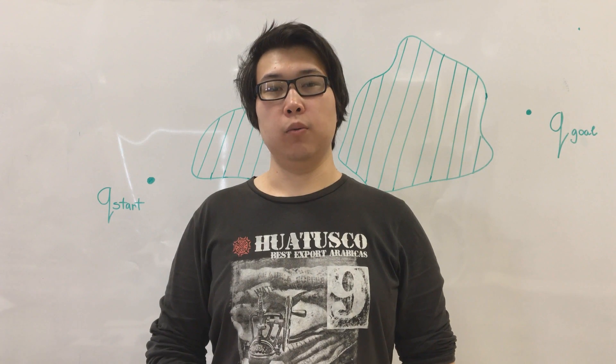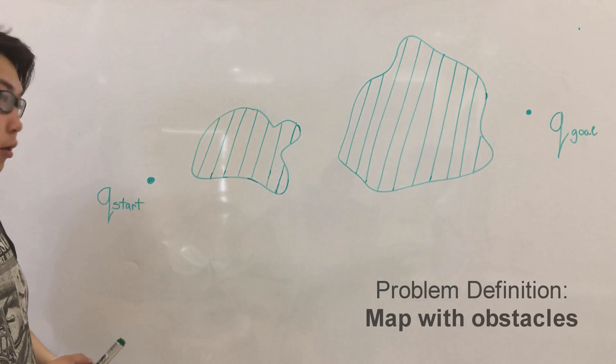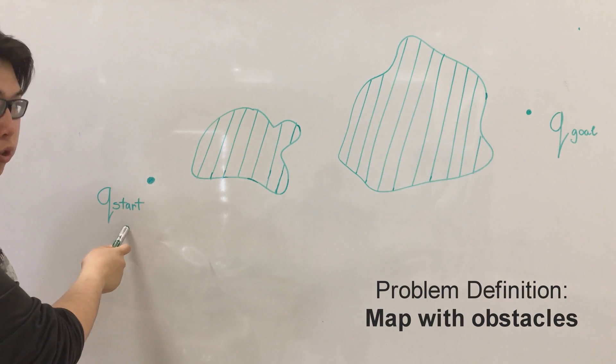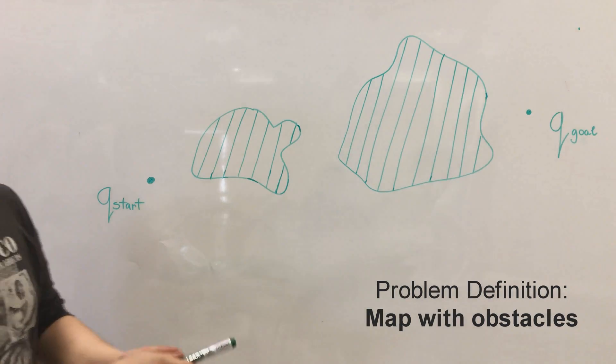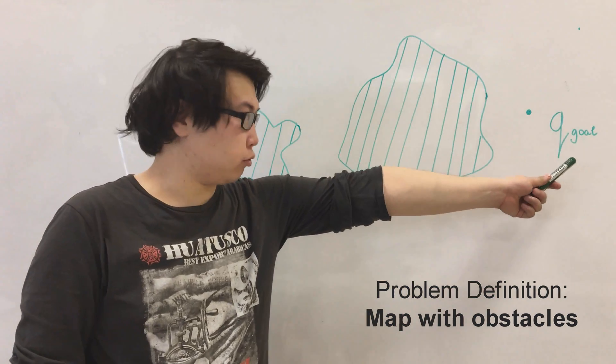Hey everyone, today I will explain bug 1 algorithm. A robot has a Q start which is the initial point where it starts and Q goal where it has to go.